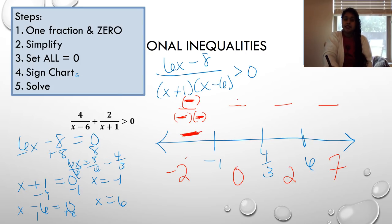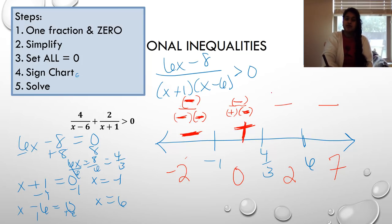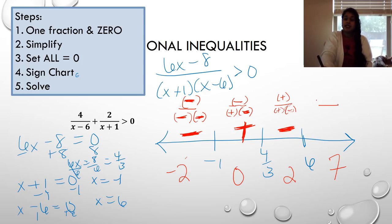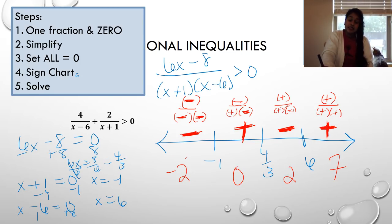Plugging in 0: numerator is negative, (0+1) is positive, so one negative — result is negative. Plugging in 0 into the numerator actually gives positive (since 6·0−8 = −8, negative), wait — with 0: numerator negative, (0+1) positive, (0−6) negative — two negatives, so positive. Plugging in 2: numerator positive, (2+1) positive, (2−6) negative — one negative, so negative. Plugging in 7: all positive — result is positive. Sign pattern: negative, positive, negative, positive.